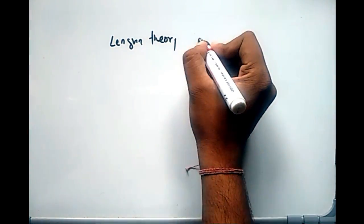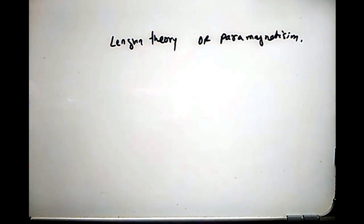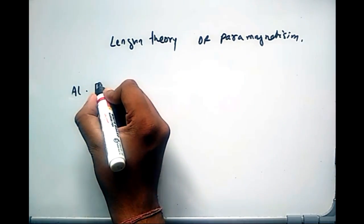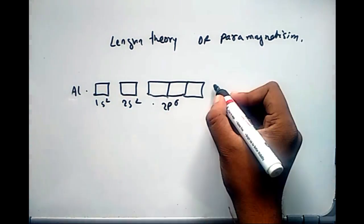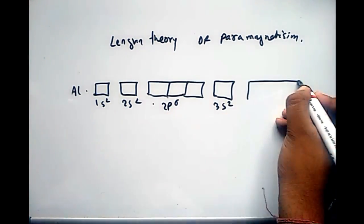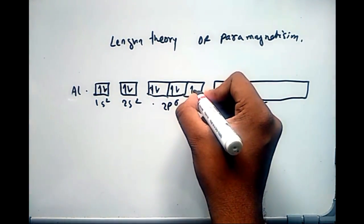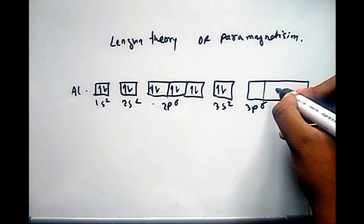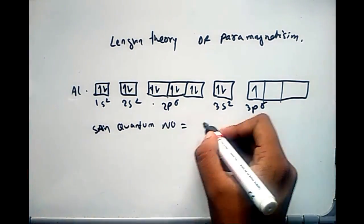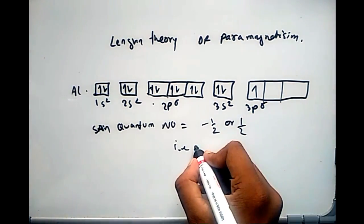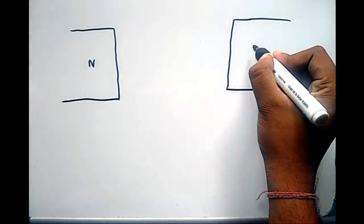The molecules of paramagnetic substances have a permanent magnetic moment. This moment comes from the electronic configuration of the atom. For example, in the case of aluminium, the spin quantum number is not balanced, so the molecule or atom can act like a tiny bar magnet. Now, what happens when we put a bar magnet in a magnetic field?